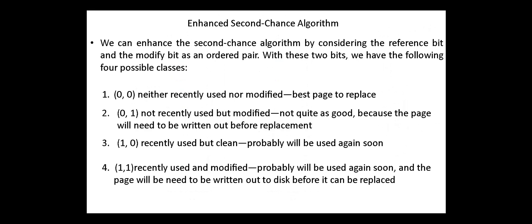Next, the enhanced second-chance algorithm. We can enhance the second-chance algorithm by considering both the reference and the modified bits as an ordered pair. With these two bits, we have the following four possibilities. Zero, zero: neither recently used nor modified — this is the best page to be selected as a victim. Zero, one: not recently used but modified — not quite as good because the page will need to be written out before replacement since the modified bit is one.